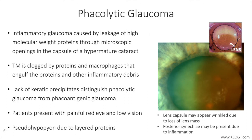Phacolytic glaucoma is a form of secondary open-angle glaucoma related to leakage of high molecular weight proteins through microscopic openings in the capsule of a hypermature or mature cataract. This leads to inflammation with clogging of the trabecular meshwork by proteins as well as macrophages that engulf the proteins and other inflammatory debris. All of these factors lead to an increase in intraocular pressure that can be acute in nature with significant pain and corneal edema.